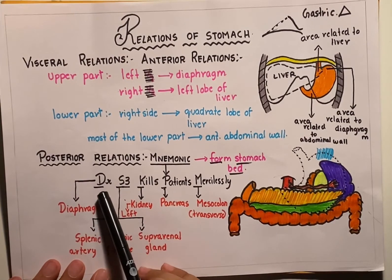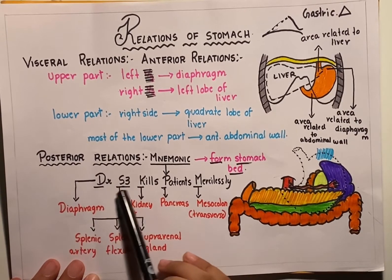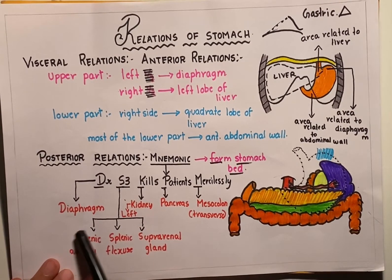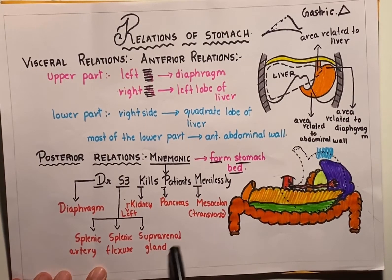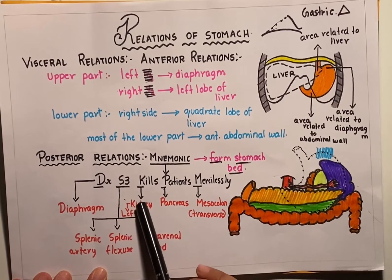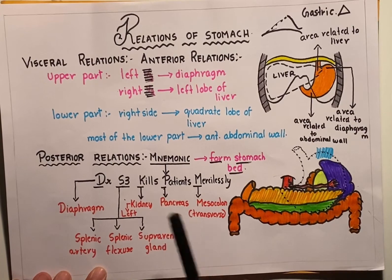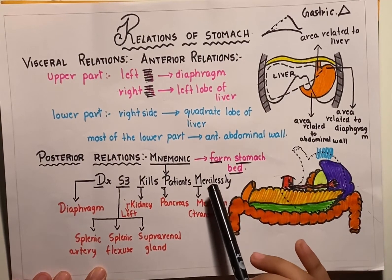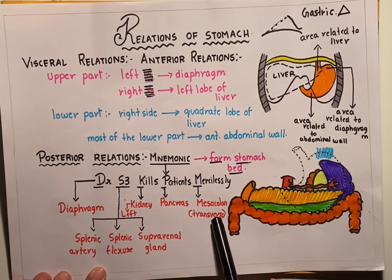In the mnemonic, the D of Doctor stands for diaphragm. The S3 represents the splenic artery, the splenic flexure of colon, and the suprarenal gland. The K of kills stands for the left kidney, the P of patients stands for pancreas, and the M of mercilessly stands for the transverse mesocolon.